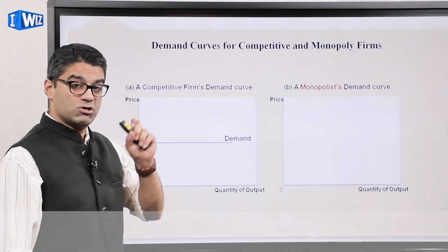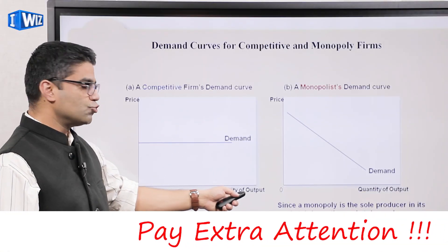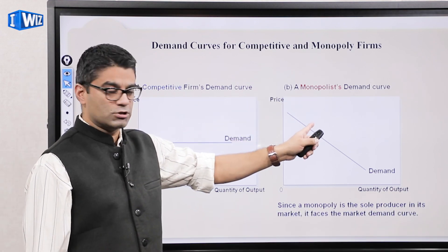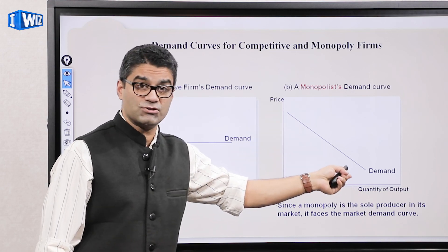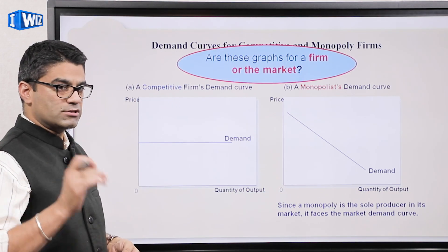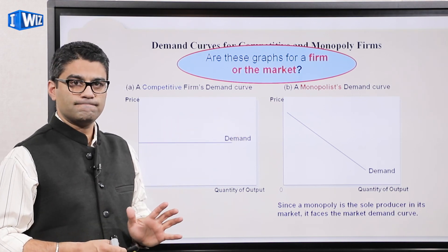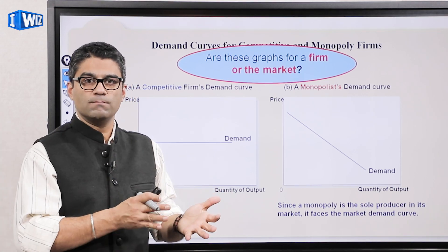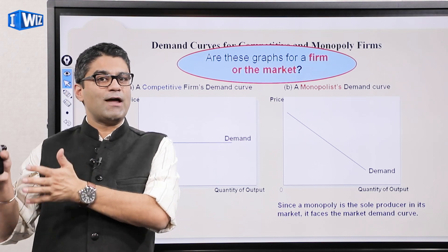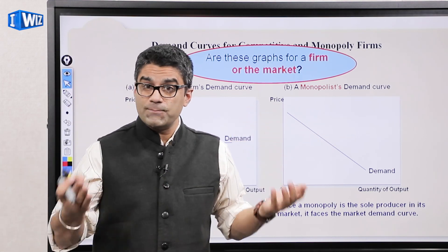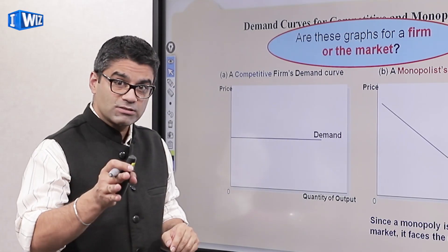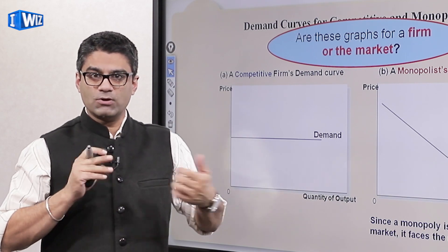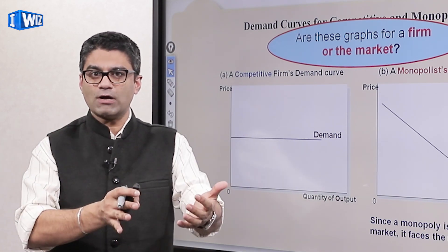In a competitive firm, the demand curve for a particular firm is horizontal — they take the price as given and choose whatever quantity based on costs. A monopolist, since they're the only producer, works off the downward sloping demand curve. Are these graphs referring to a firm or the market? In a competitive market, the firm and the market are separate graphs. But in a monopoly, since I'm the only producer, I am the market — the firm and the market are one graph, because there's only one producer.